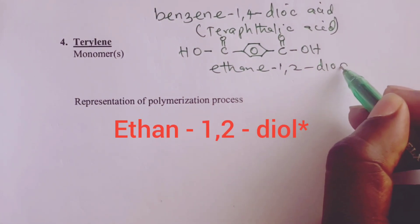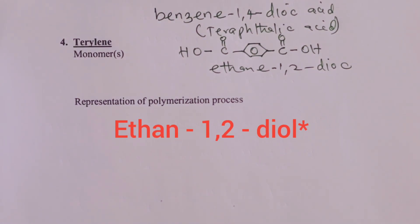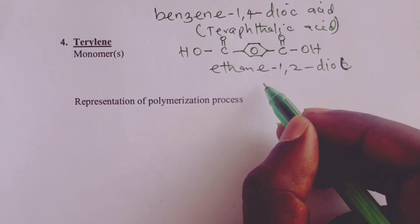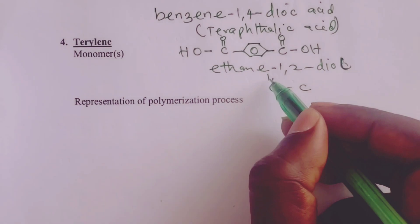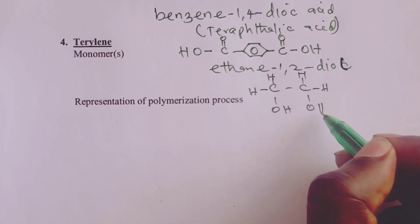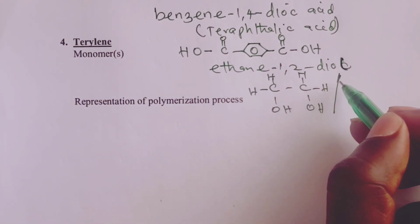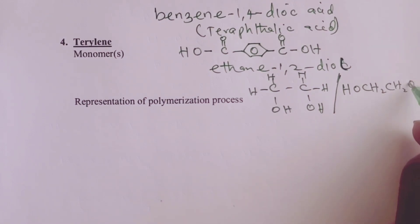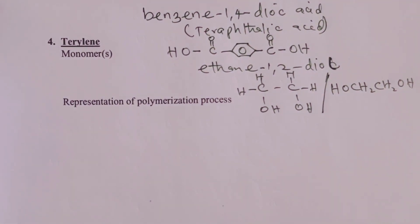Our second monomer is ethan-1,2-diol. This is not new — we met it in alkenes, where we said if you oxidize ethene using our usual oxidizing agents, you get ethan-1,2-diol. Its condensed structural formula is HO-CH2-CH2-OH. That becomes our second monomer.